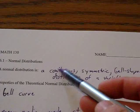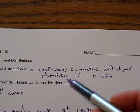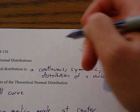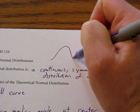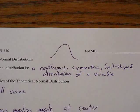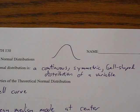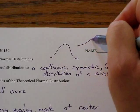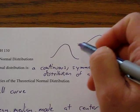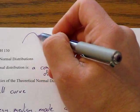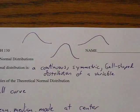A normal distribution is a continuous, symmetric, bell-shaped distribution of a variable. For example, this is a normal distribution. If the distribution is skewed to the left or skewed to the right, it's not normal.